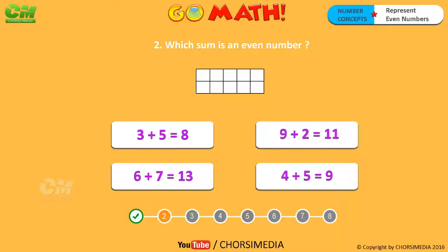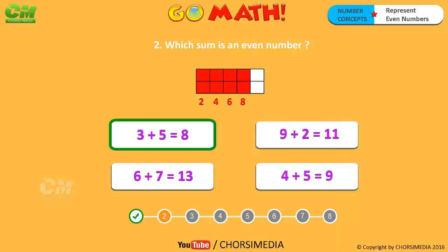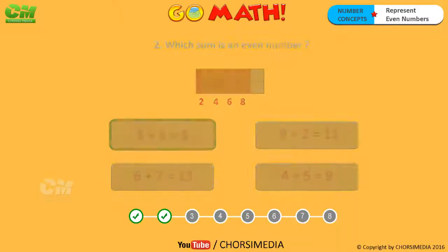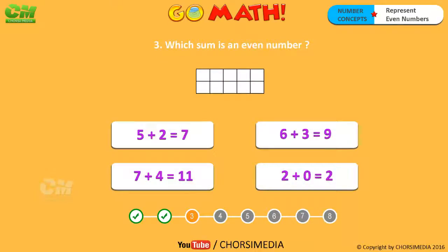Which sum is an even number? You are right! The correct answer is three plus five equals eight. Two, four, six, eight — eight is an even number.